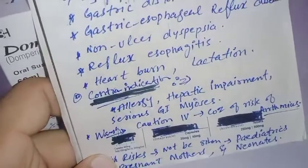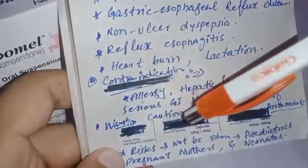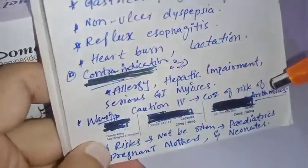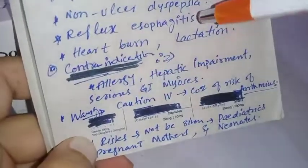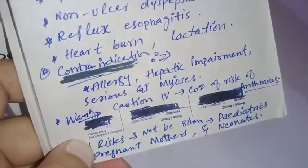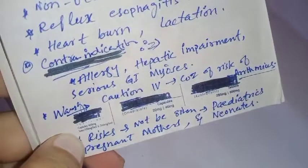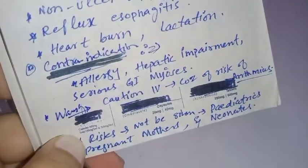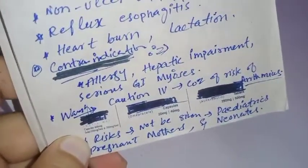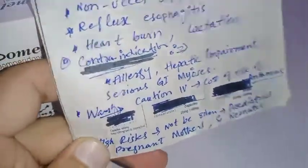Regarding warnings: we are talking about the oral suspension, but if you give domperidone via IV intravenous injection, you should be very careful because it can cause a risk of arrhythmias — irregular heartbeat — mainly in persons who have cardiac abnormalities, cardiac failure, or any other cardiac dysfunction.